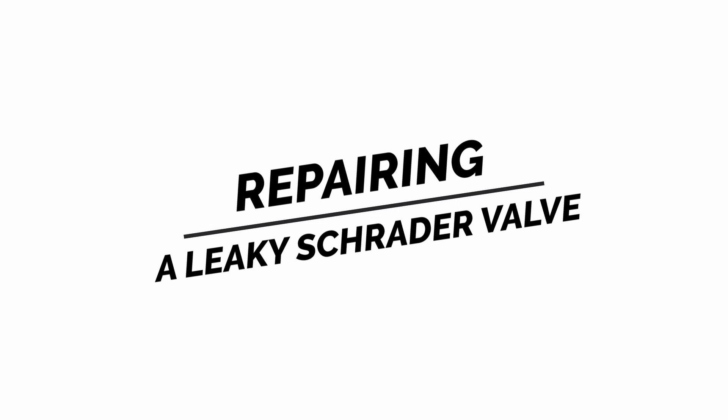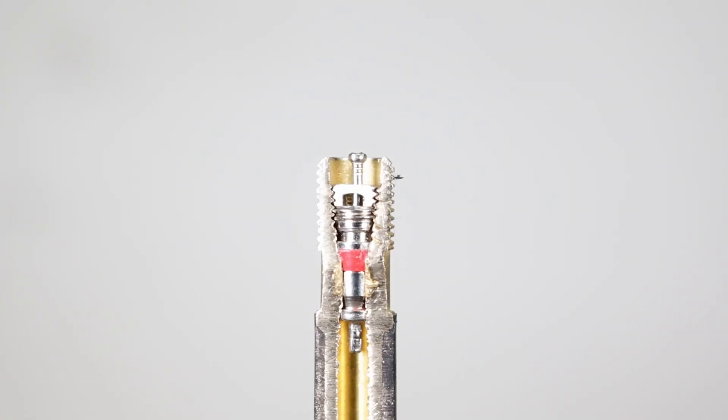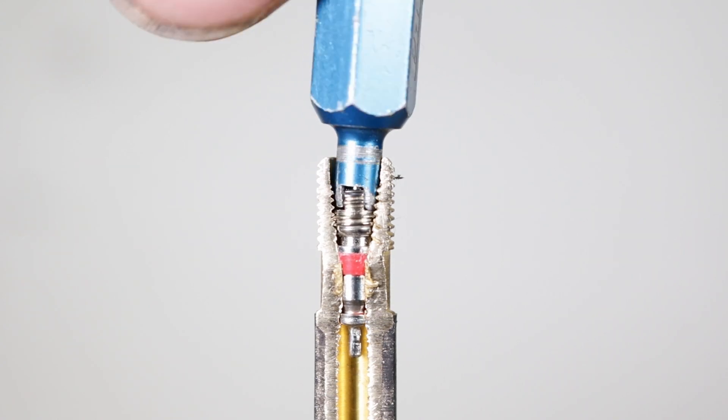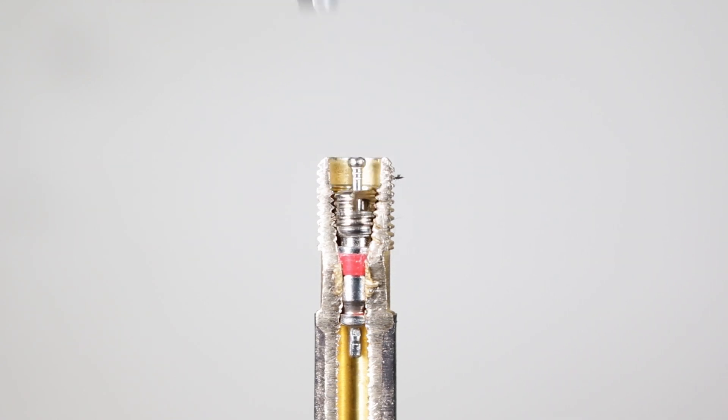Repairing a leaky Schrader valve. First make sure the valve core is screwing all the way. Use the valve tool to tighten the valve core clockwise. It only needs to be finger tight.